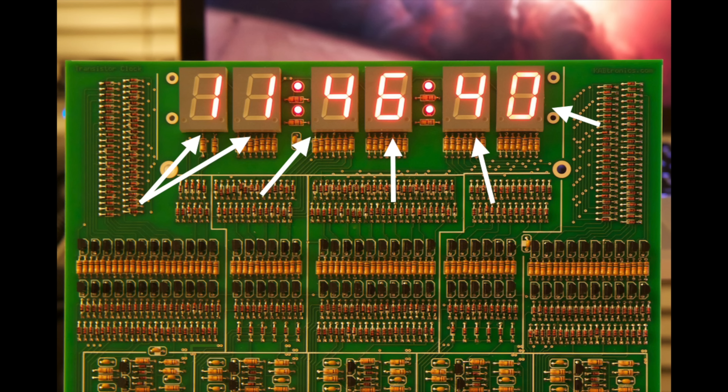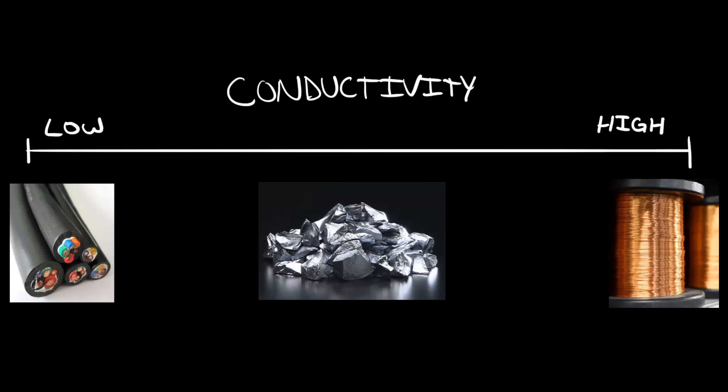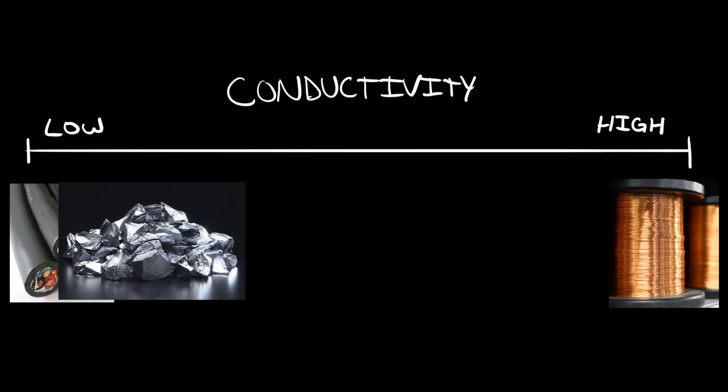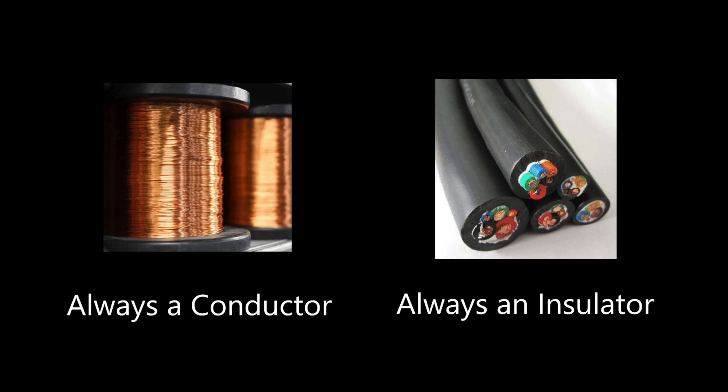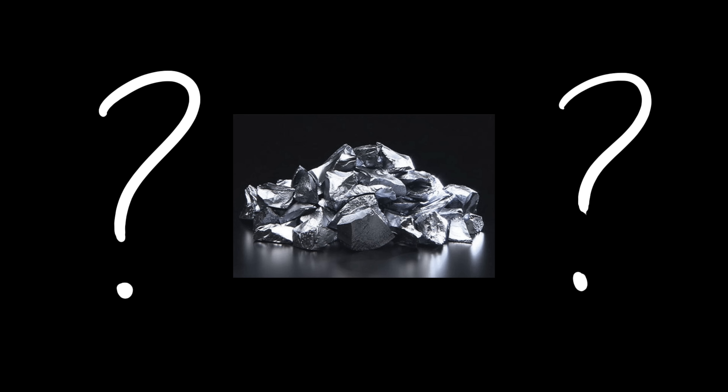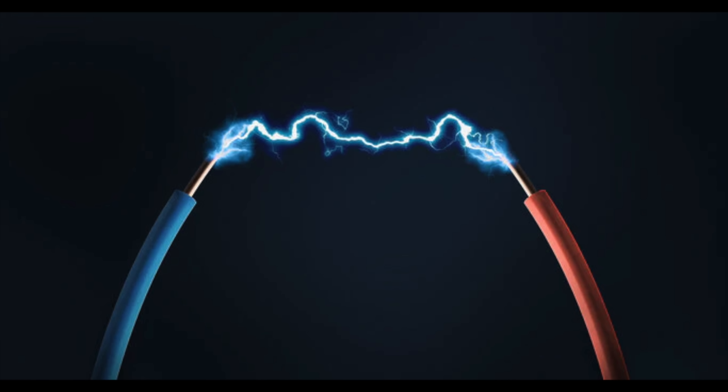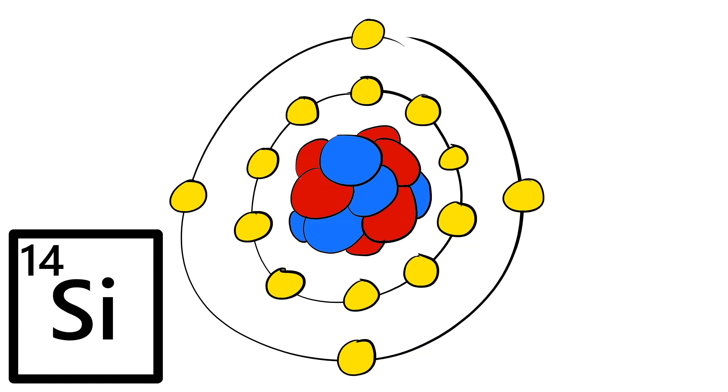This allows us to easily build up a network of interconnected devices that can do useful work quickly and without human intervention. So semiconductors can switch between conducting and not conducting — but how is that actually possible? Nothing can suddenly turn copper from a conductor into an insulator, and likewise nothing can change rubber from an insulator to a conductor. So why is it that semiconductors have this superpower? Well, to understand that, we first need to understand what conductivity is, and to do that we'll need to talk about atoms.